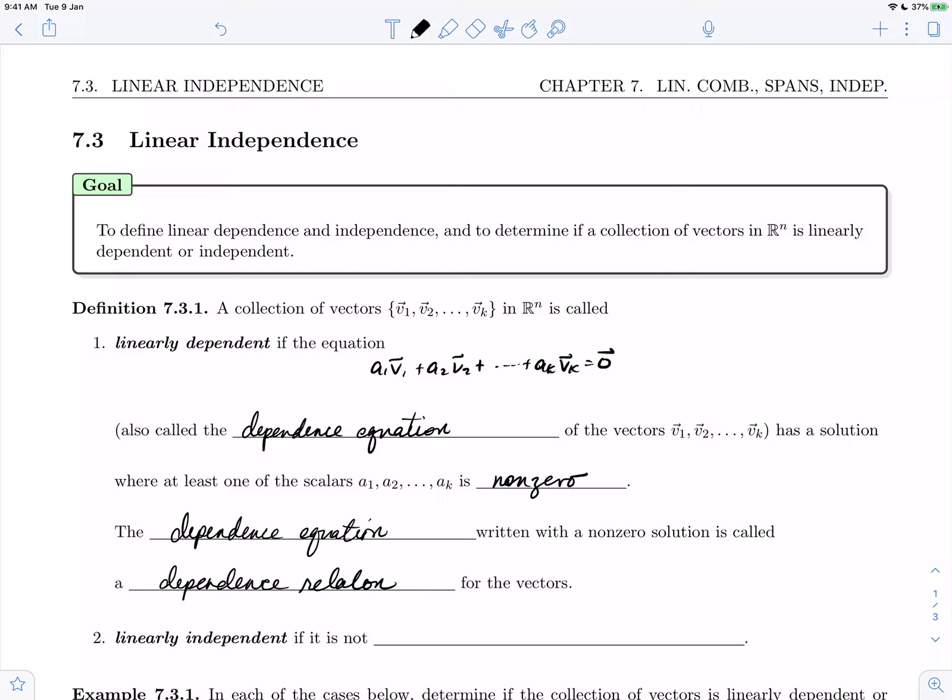Part 2. A collection of vectors v1 through vk in Rn is called linearly independent if it is not linearly dependent.